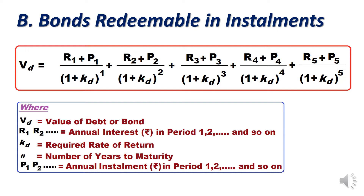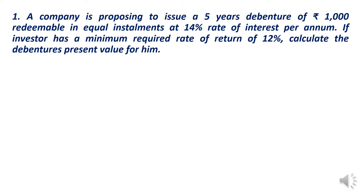Kd is the required rate of return expected by the investor. N is the number of years to maturity — how long until this bond is redeemed. P1, P2 are the annual installment amounts paid by the company to the bond holder. By applying this formula we can easily calculate the bond value if it is redeemable in installments.